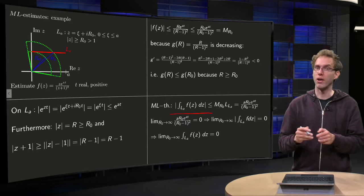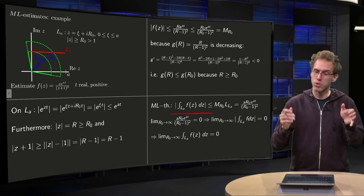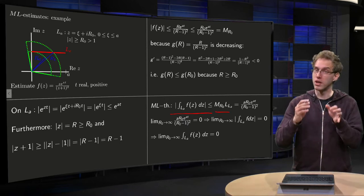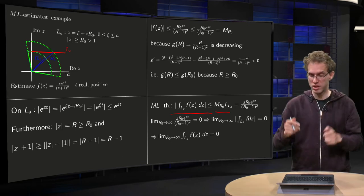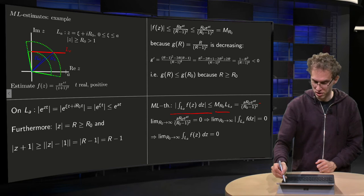The integral along LA of f(z) in modulus is smaller than M_R0 times the length of LA. Well, the length of LA is easy, it's just a line, so its length equals A. So that's the quantity over there.